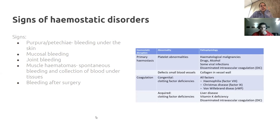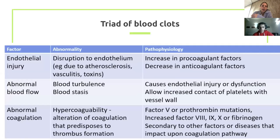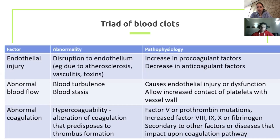Virchow's triad describes the three conditions needed for a blood clot to form: endothelial injury, abnormal blood flow, and abnormal coagulation. These factors work together to increase clot risk — for example, post-surgery patients who aren't moving much have abnormal blood flow, and combined with other factors, have significantly increased clotting risk.